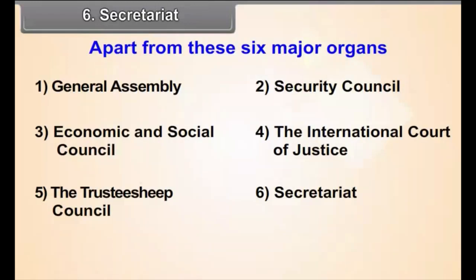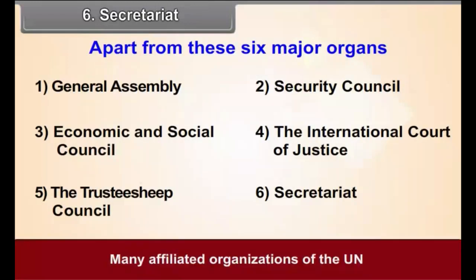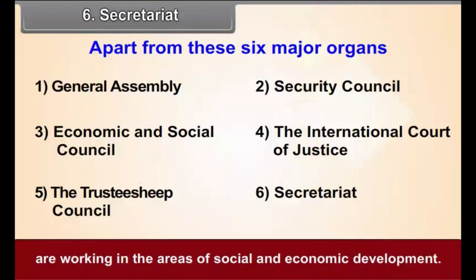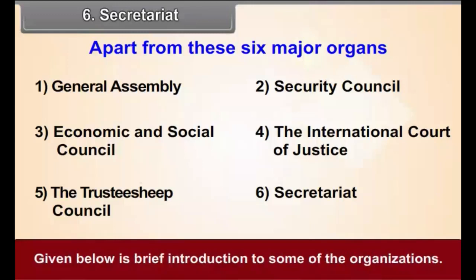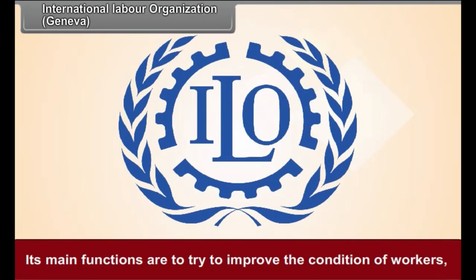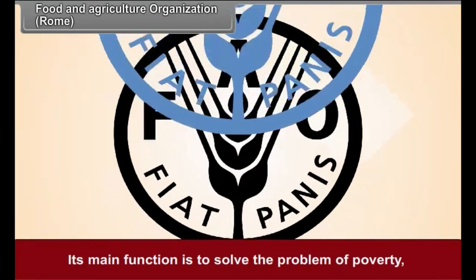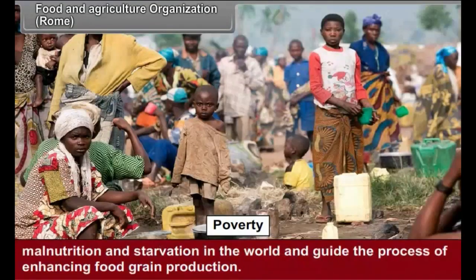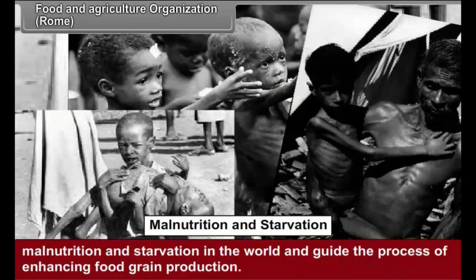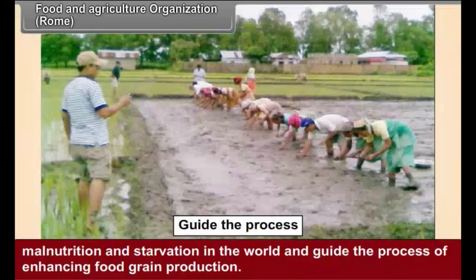Apart from these six major organs, many affiliated organizations of the UN are working in the areas of social and economic development. Given below is a brief introduction to some of the organizations. International Labour Organization (Geneva): Its main function is to try to improve the condition of workers, ensure that they get due wages, and their health is protected. Food and Agricultural Organization (Rome): Its main function is to solve the problem of poverty, malnutrition and starvation in the world, and guide the process of enhancing food grain production.